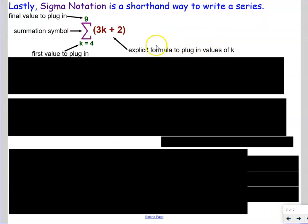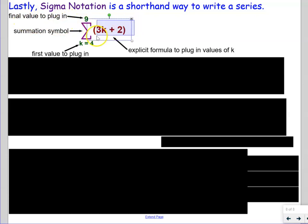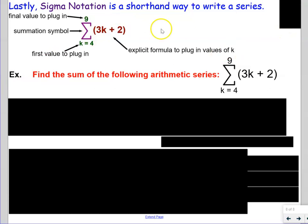The last slide covers sigma notation. This is a shorthand way to write a series. You'll see this Σ symbol, called the summation sign or sigma, and it tells you to add everything up — it's a series. On the bottom you'll have k equals a number (or i or n), telling you the first value of the variable to plug in. The number on top is the final value, and the expression on the right is the explicit formula to plug those values into.